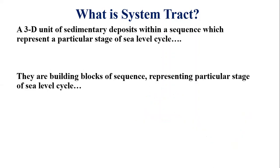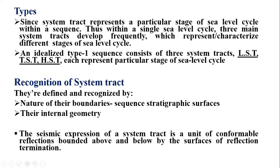What are the types of transgressive system track? A system track represents a particular stage of a sea level cycle within a sequence. Within a single sea level cycle, three main system tracks develop frequently. An idealized type 1 sequence consists of three system tracks: the lowstand system track, the transgressive system track, and the highstand system track. Each of these system tracks represents a particular stage of the sea level cycle.